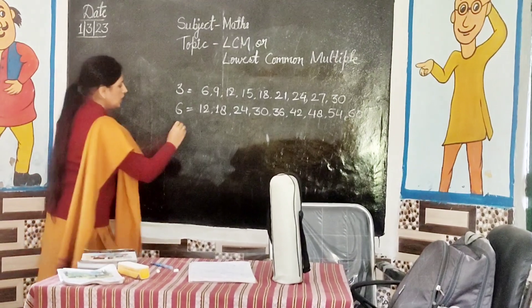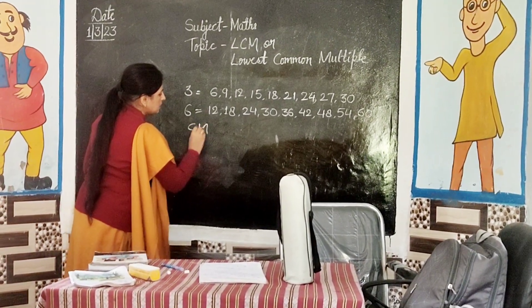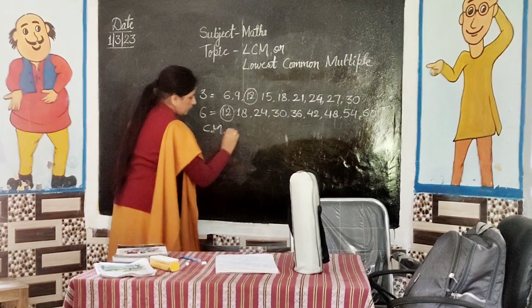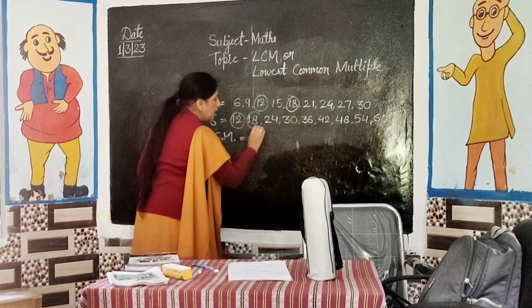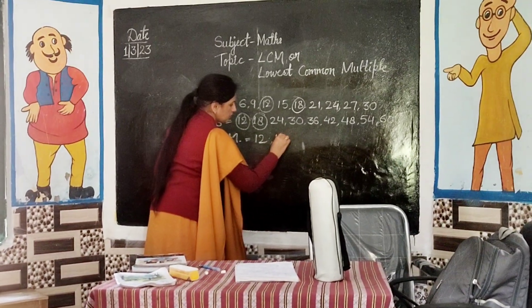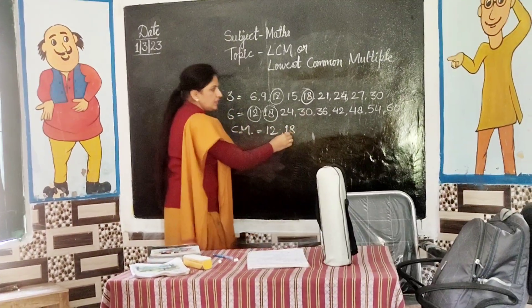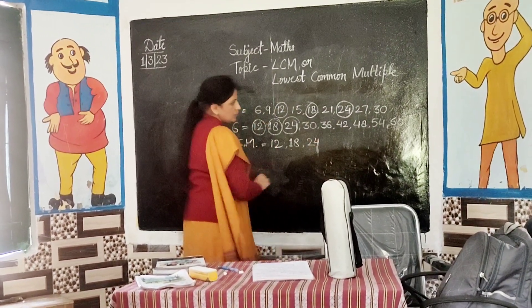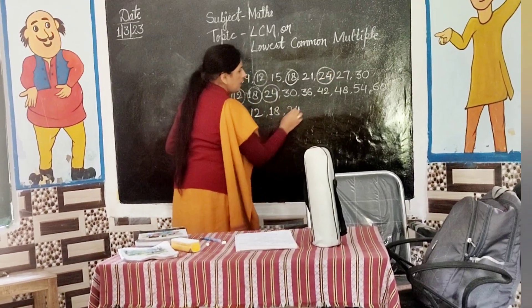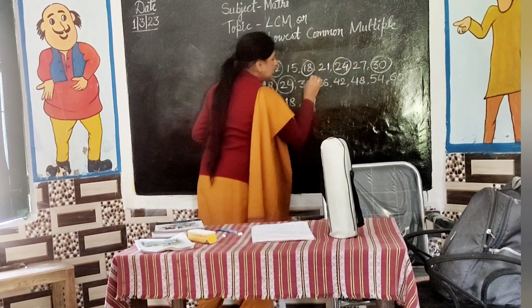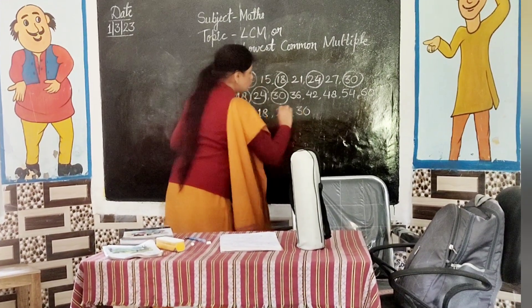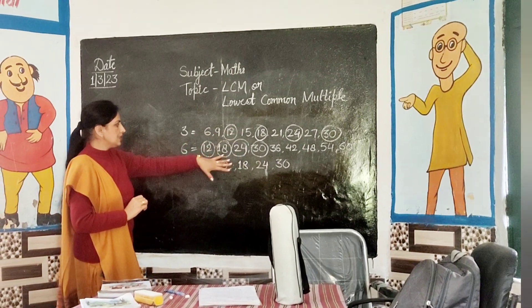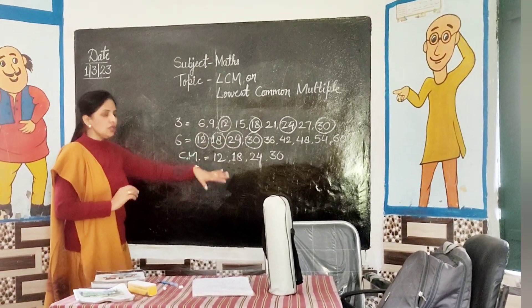Now see — what are the common multiples? Common multiples are 12, 18, 24, and 30. Very good. So 12, 18, 24, 30 are the common multiples of 3 and 6.